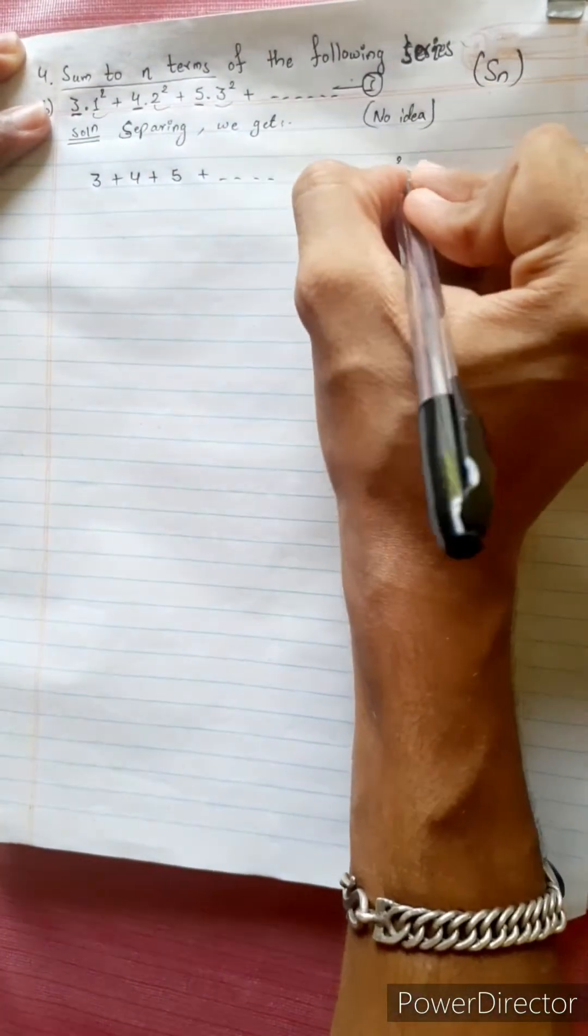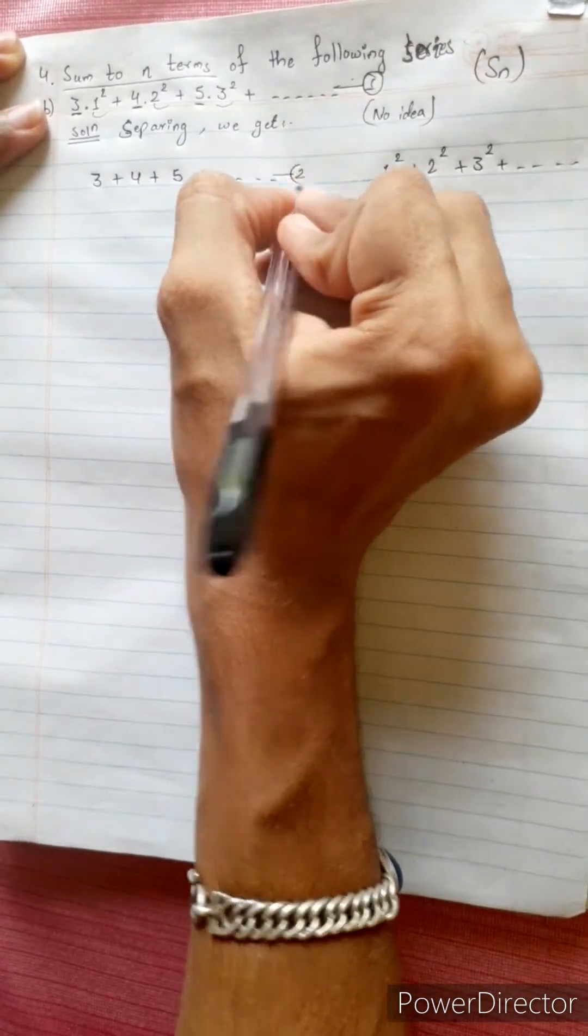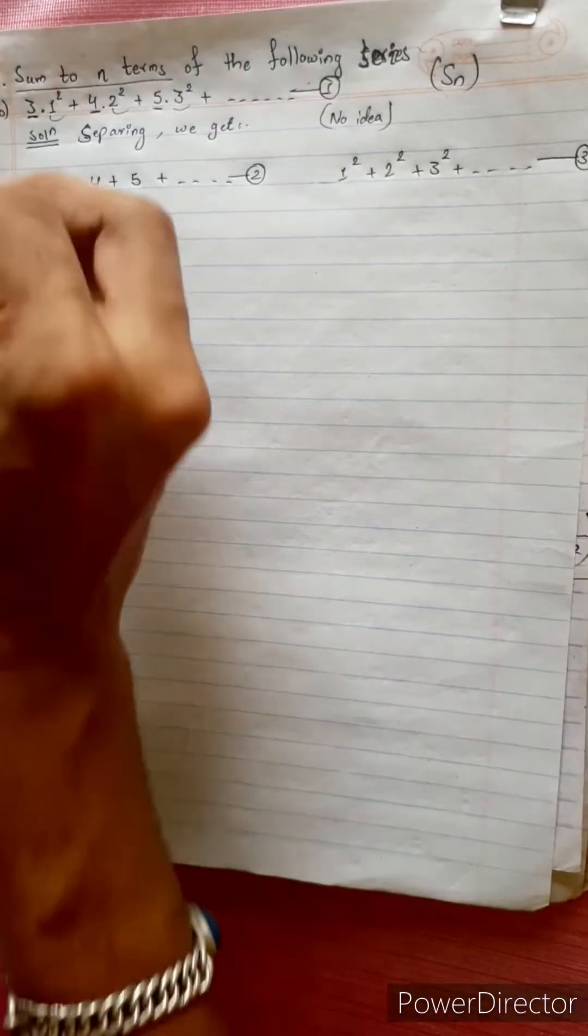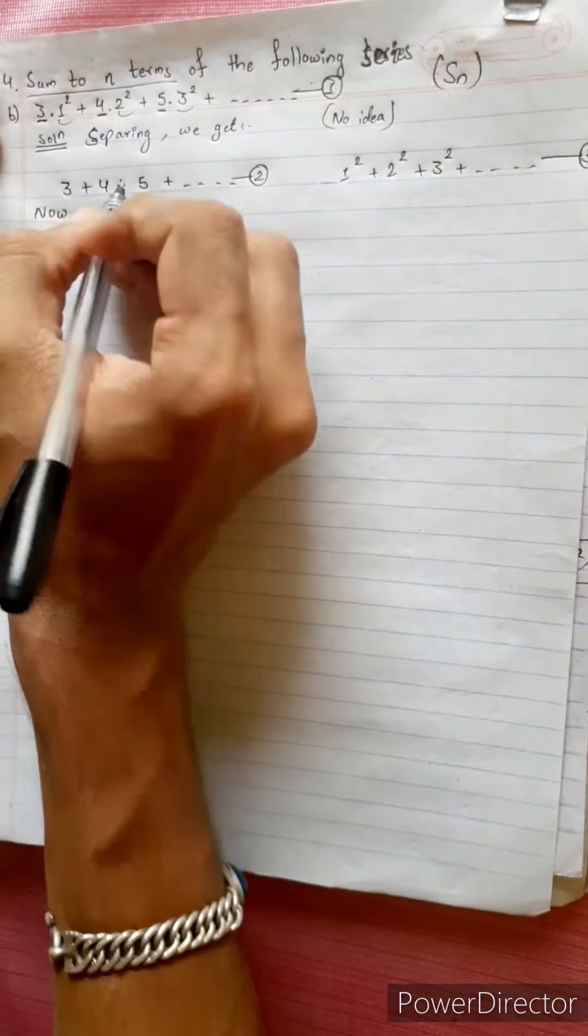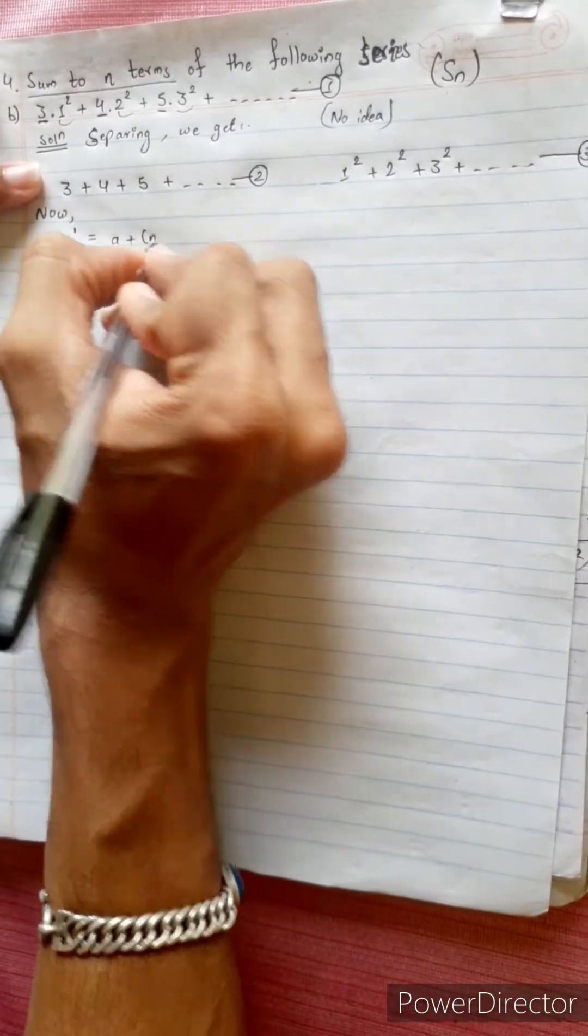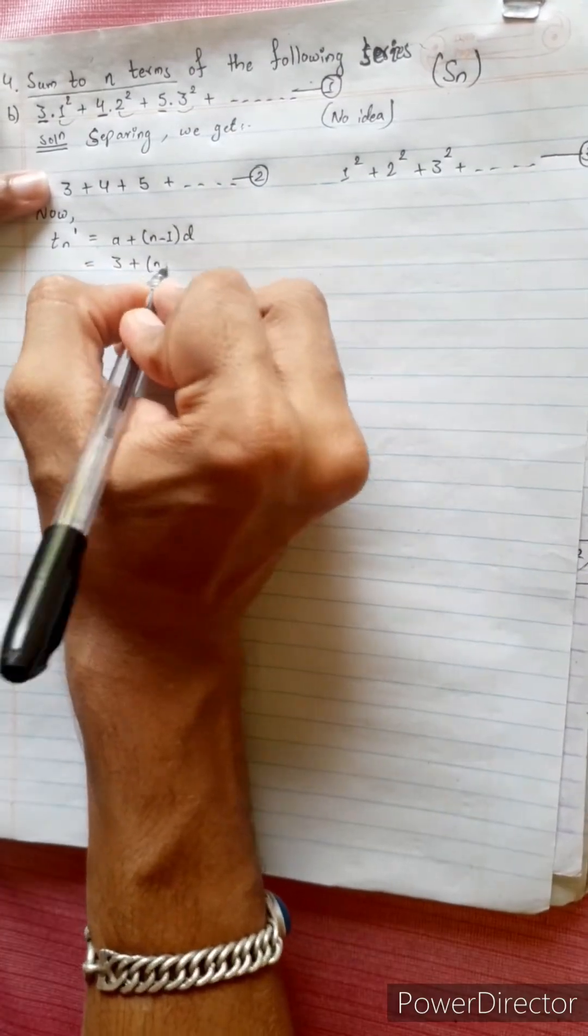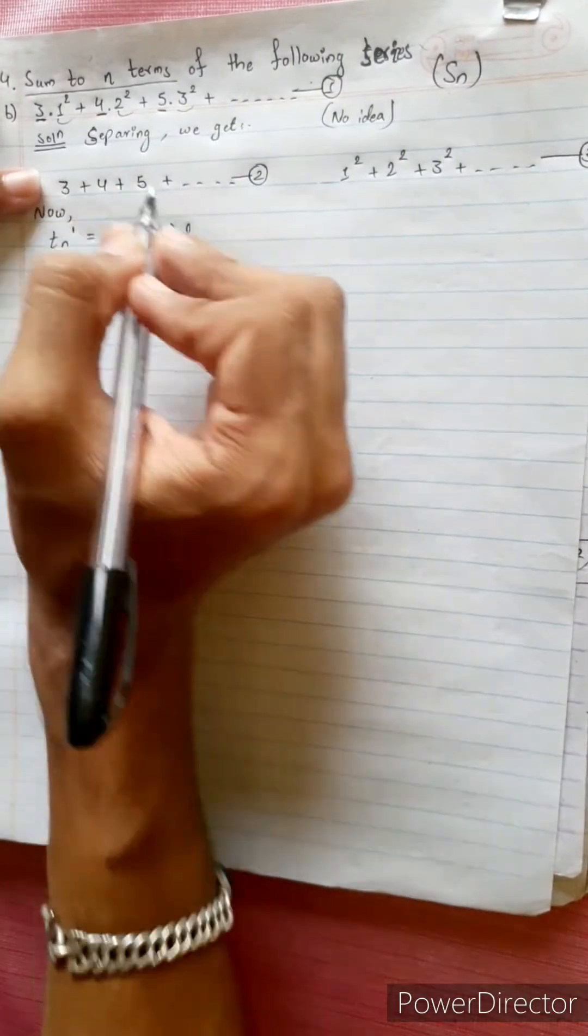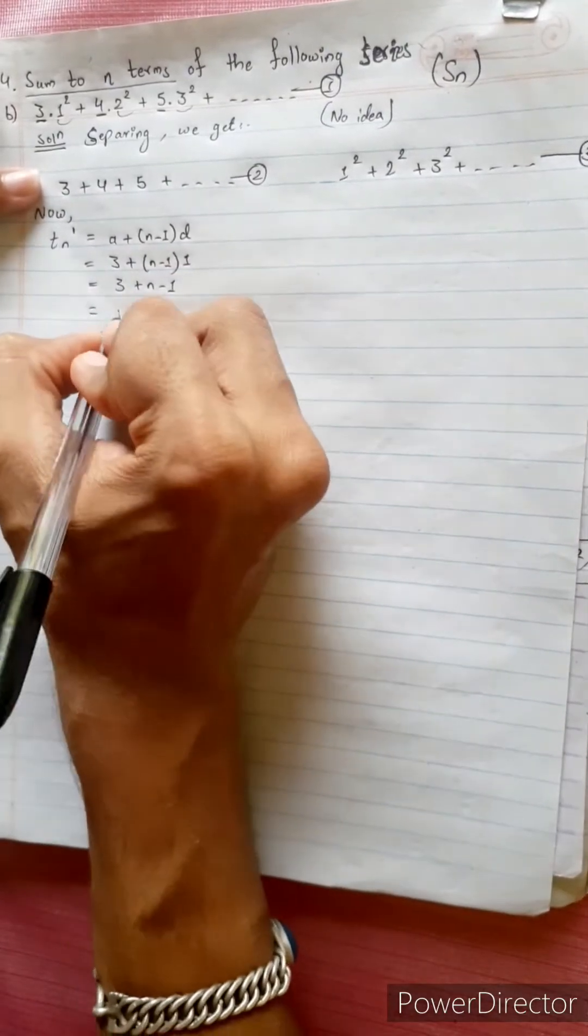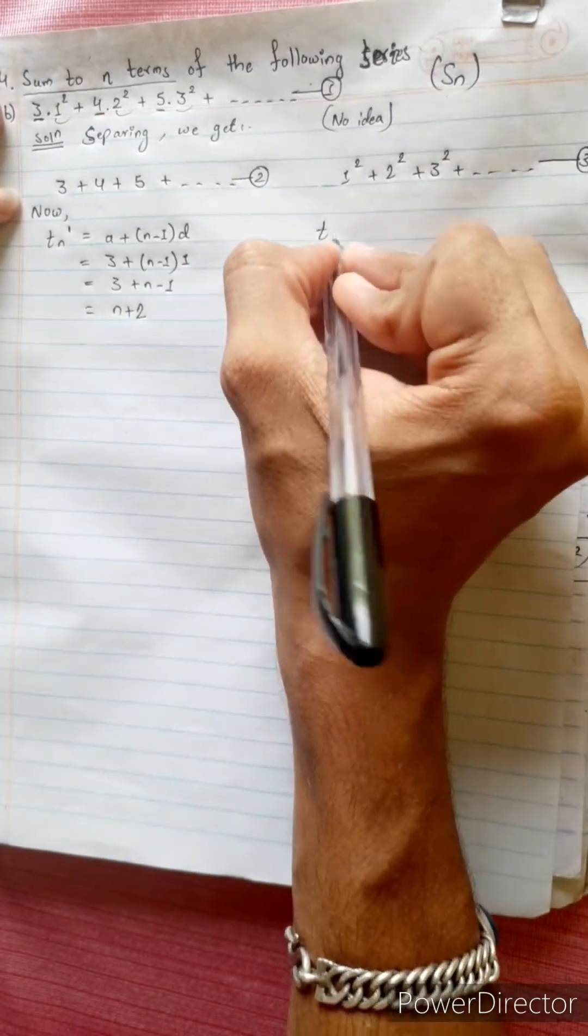We get 1 square plus 2 square plus 3 square plus dot dot dot. Now nth term tn equals a plus n minus 1 into d. a₁ equals 3 plus n minus 1, difference 1 equals 3 plus n minus 1 equals n plus 2.